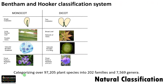Now let us see natural classification. A classical example is Bentham and Hooker's classification system, which classified plants into 202 families and approximately 7,500 genera — a vast classification system that uses many characteristics.